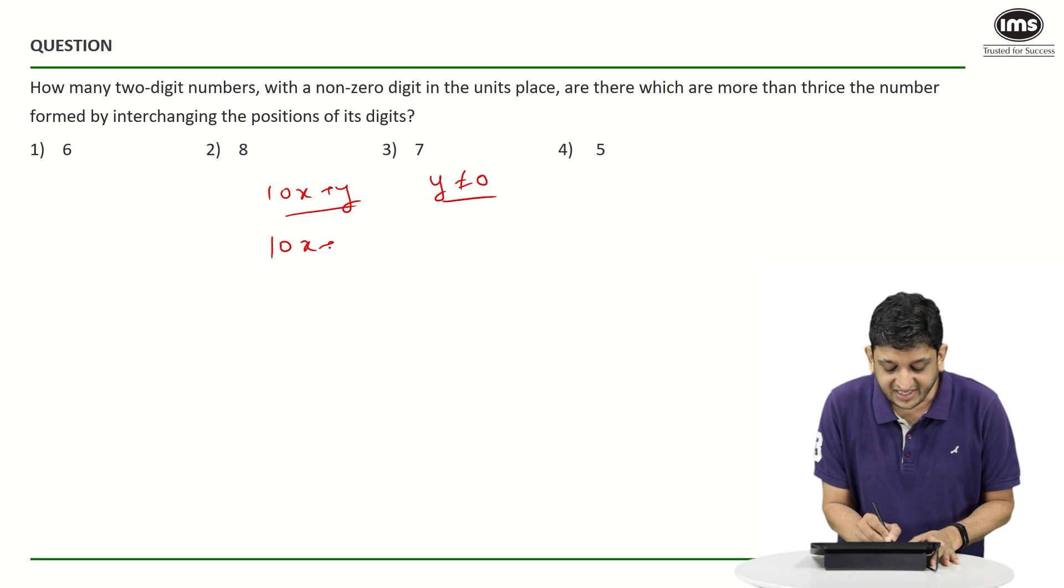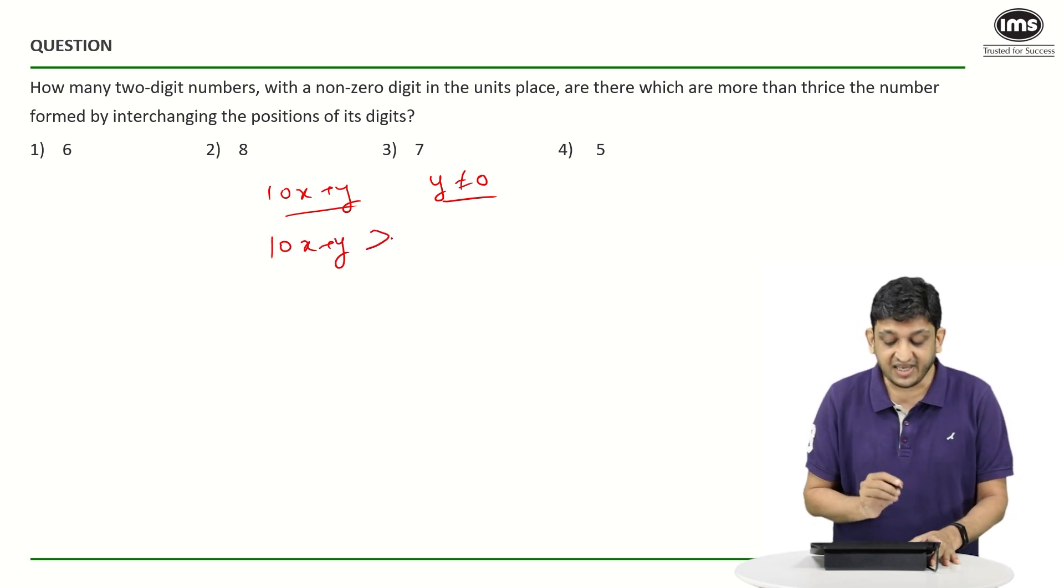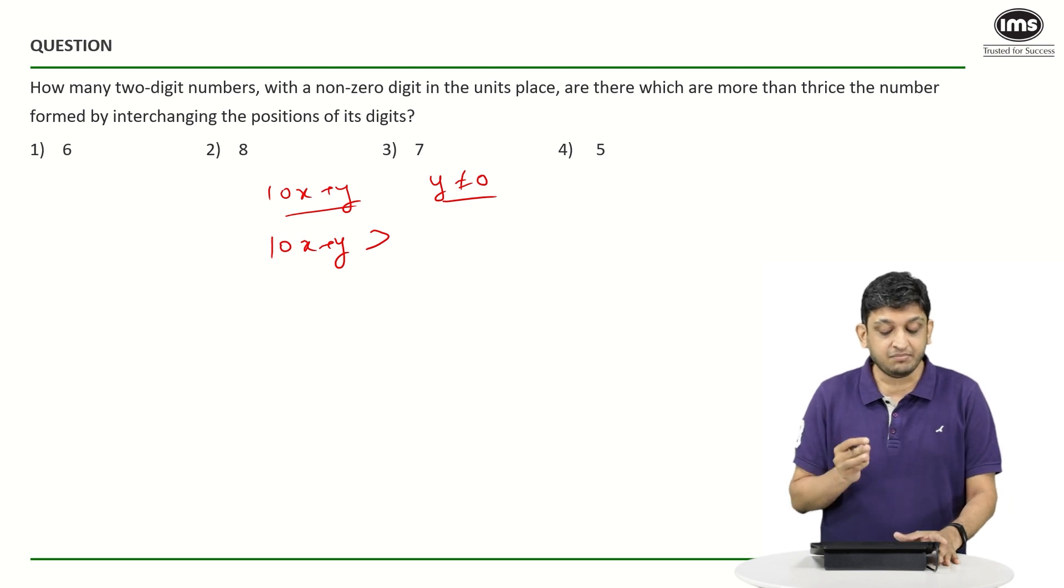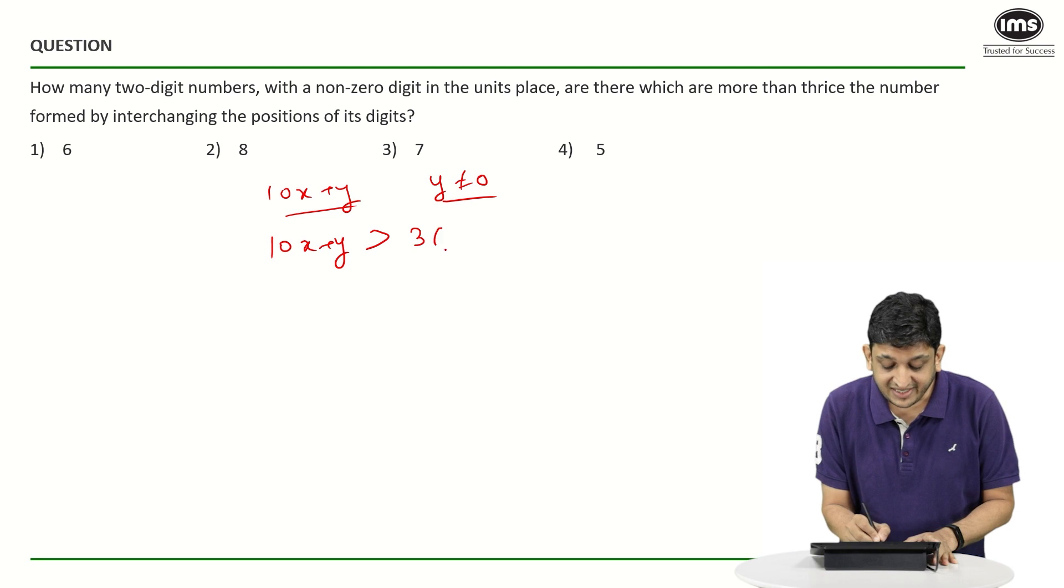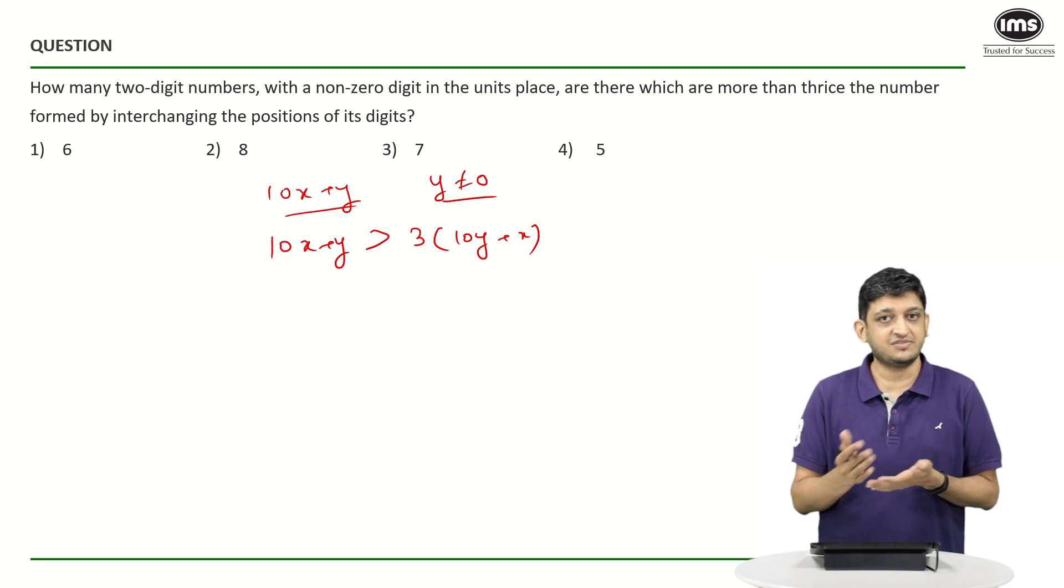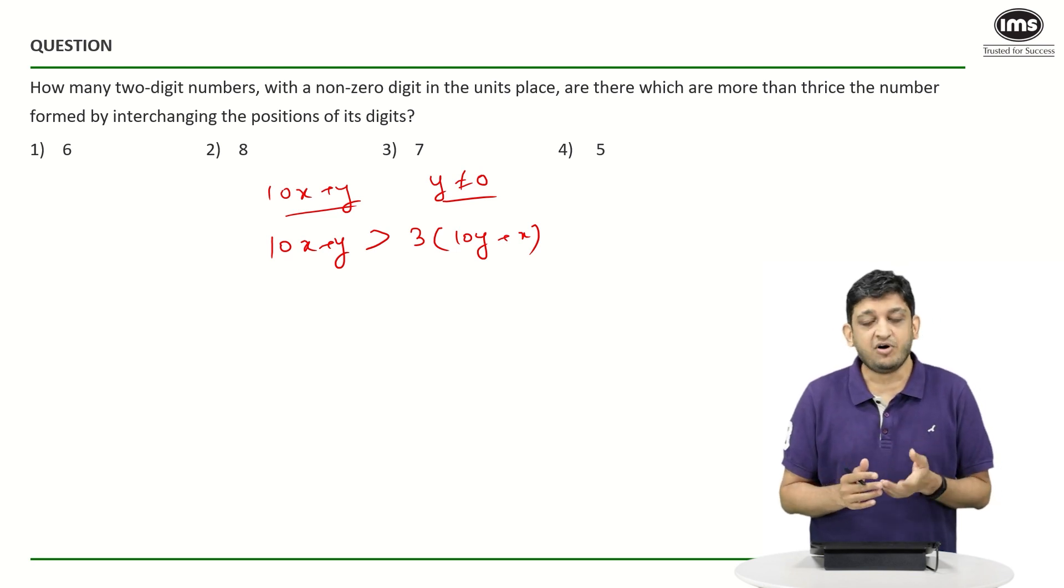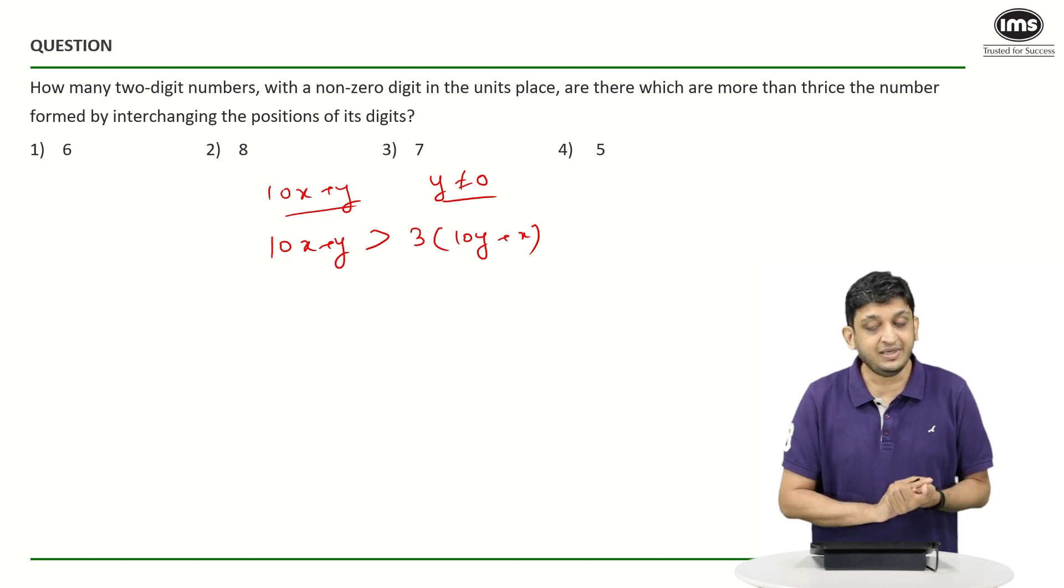So the original number that we have here, 10X plus Y, should be greater than thrice the number found by interchanging the digits. Another advantage of writing it as 10X plus Y is that the number that is formed by interchanging the digits or reversing the digits in this case is going to be 10Y plus X.